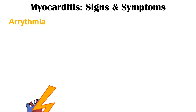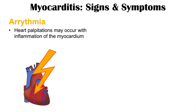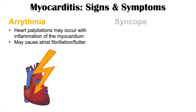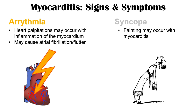Myocarditis patients can also experience arrhythmias, as inflammation of the main heart muscle can cause an abnormal heartbeat. Arrhythmias can include tachycardia, which is a fast heart rate greater than 100 beats per minute, as well as atrial fibrillation and atrial flutter. Syncope, or fainting, can also occur in some patients with myocarditis.